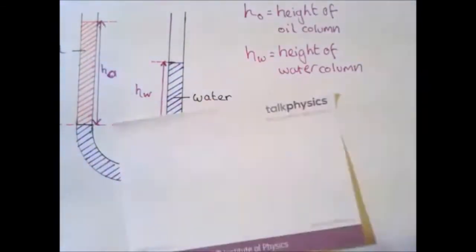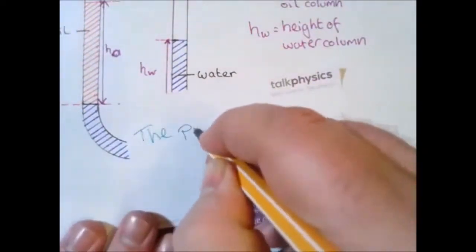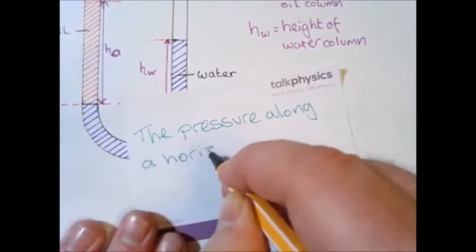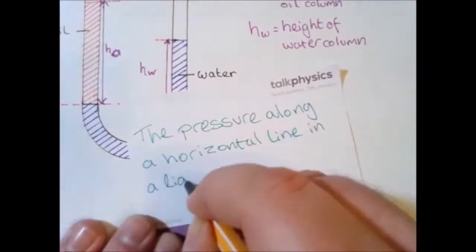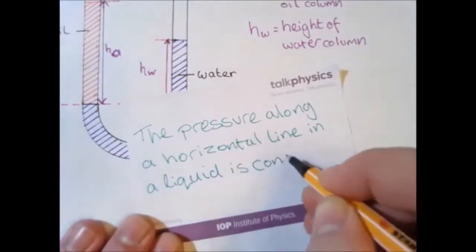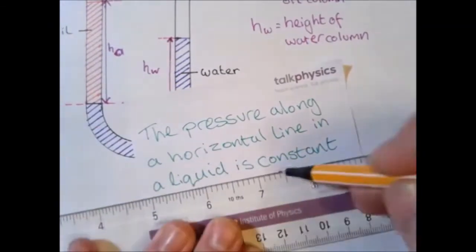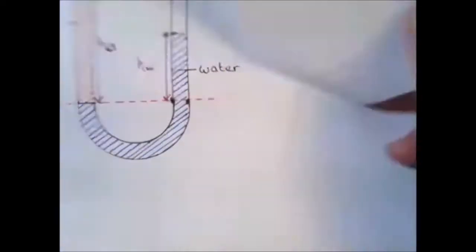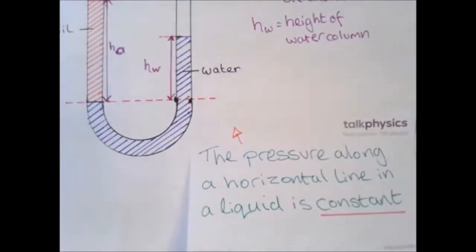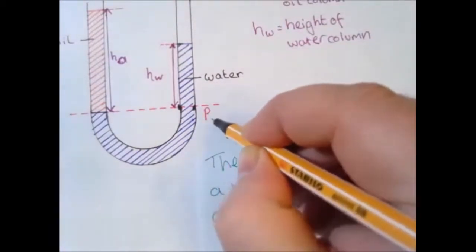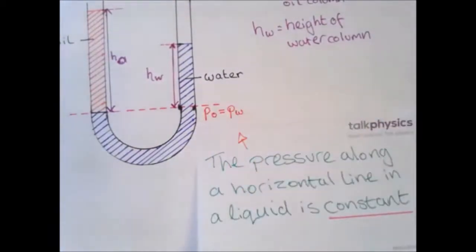Now, this line goes back to the rule that the pressure along a horizontal line in a liquid is constant. So, along that line the pressure is constant on both sides of it pushing down into that U-shape. We can say that the pressure from the oil is equal to the pressure given by the water.